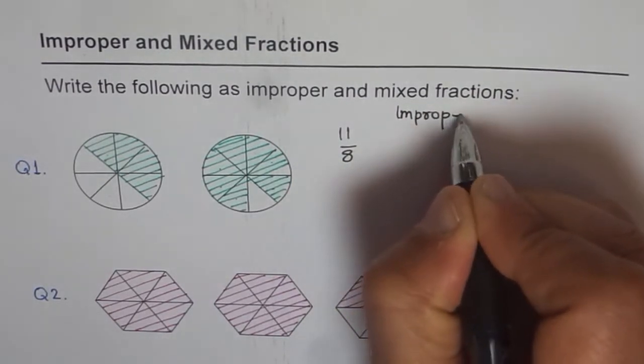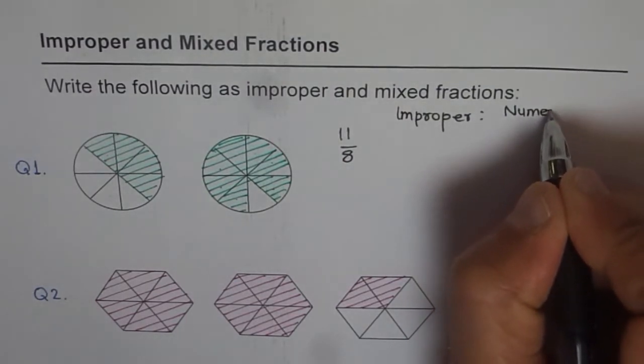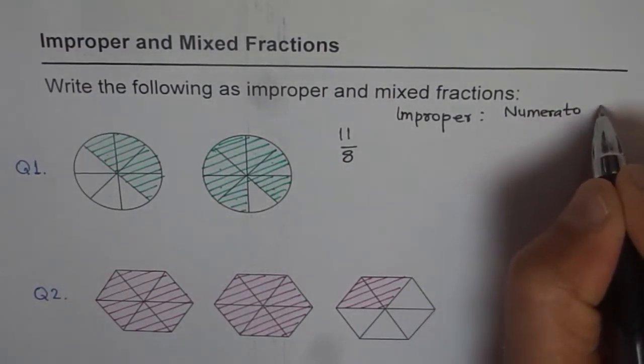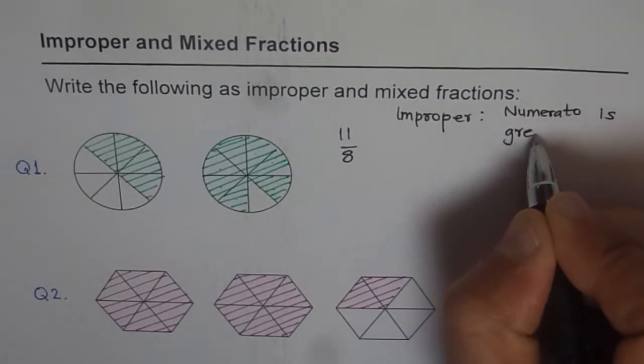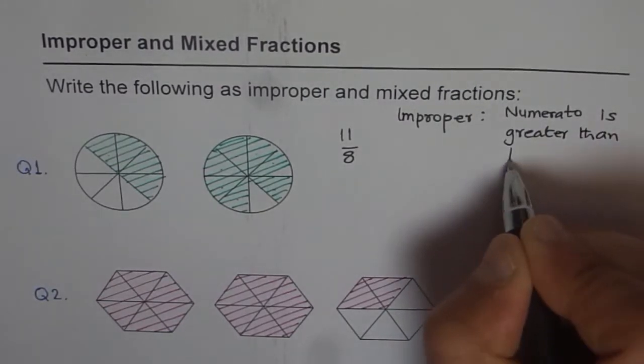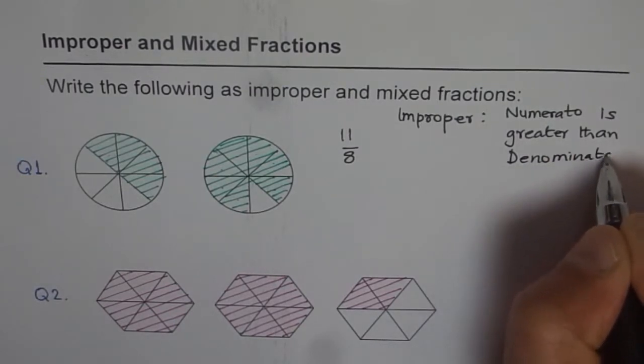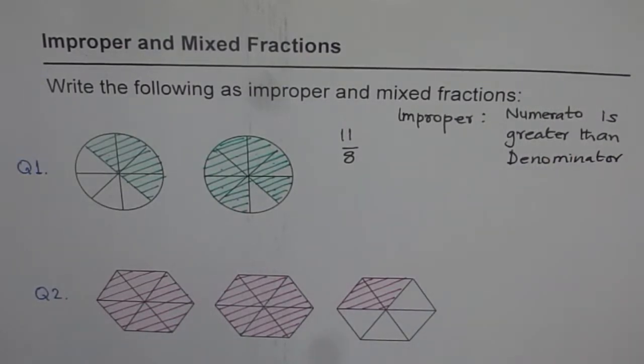So why is it improper? Can you answer that question? It is improper because numerator is greater than what? Denominator, right?